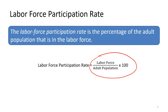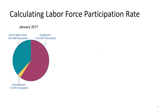We'll do an example using data from January 2017. In January 2017, out of labor force were 94.3 million, employed were 152.08 million, and unemployed were 7.635 million. To estimate the labor force participation rate, we first need to calculate adult population.